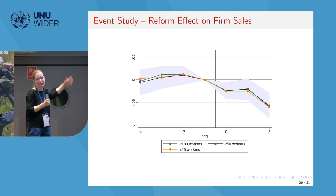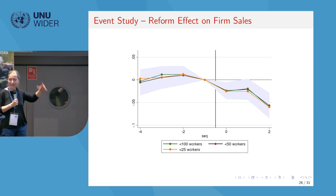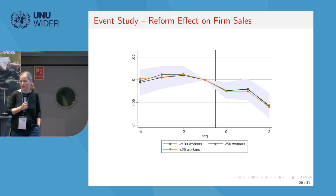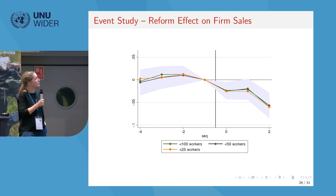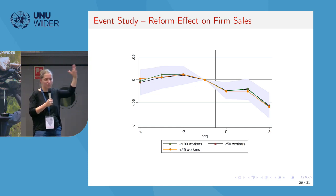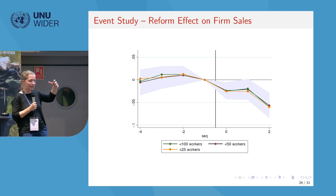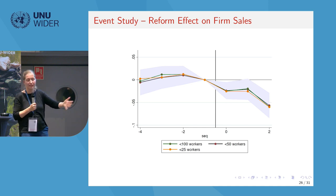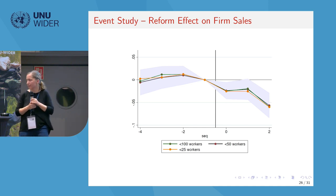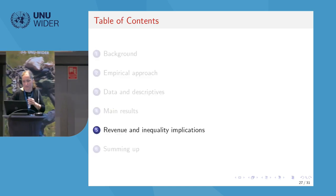What we think is interesting here is the richness of the data that allows you to track these types of reforms and also control for confounders. These firms may be very different from others that are treated, but we can absorb differences in industry trends and firm size trends, and still the effect shows up.